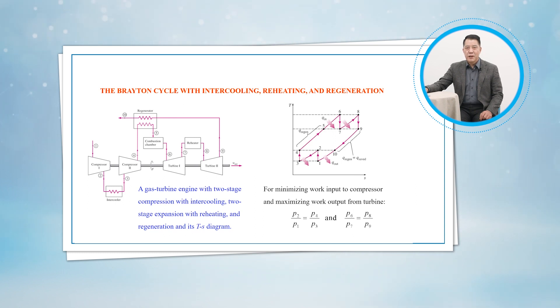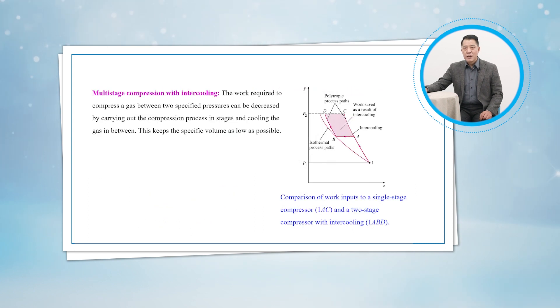For best performance, the net work of the gas turbine cycle is the difference between the turbine work output and the compressor work input, and it can be increased by either decreasing the compressor work or increasing the turbine work, or both.